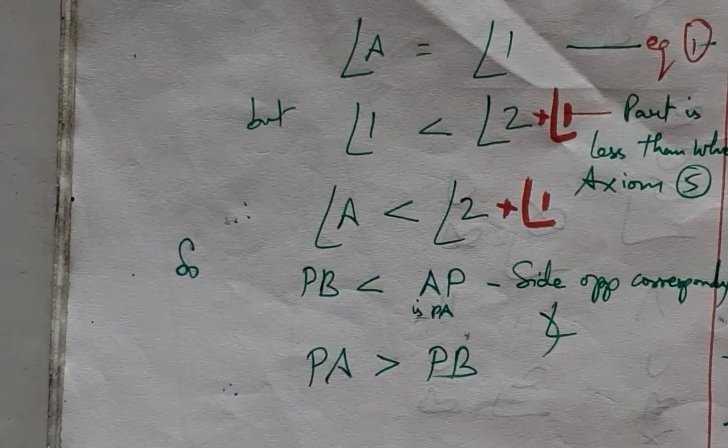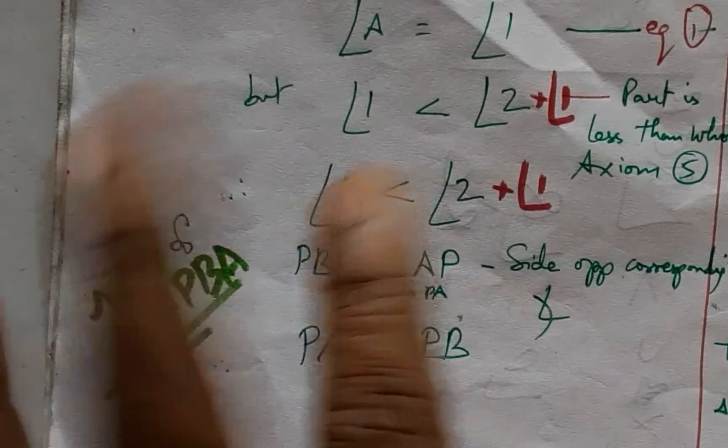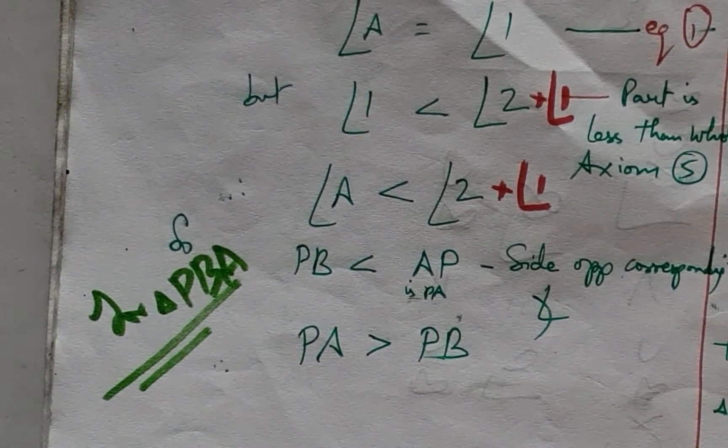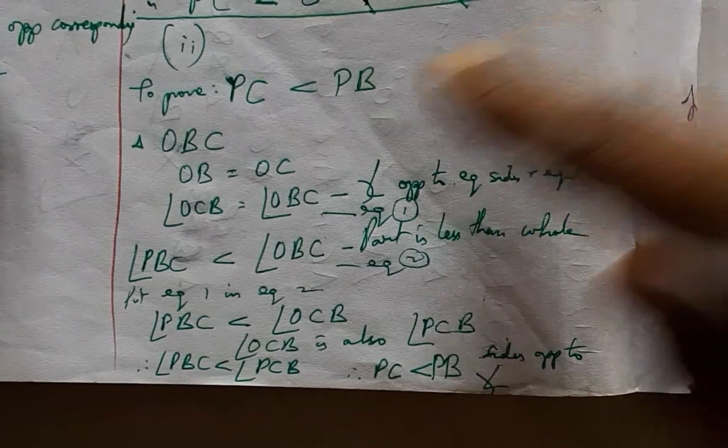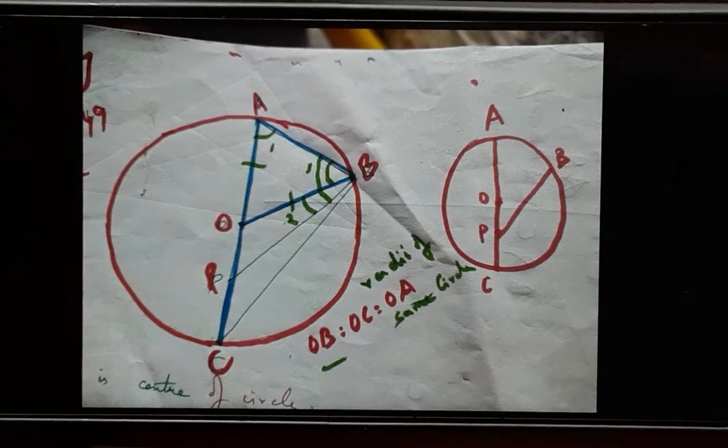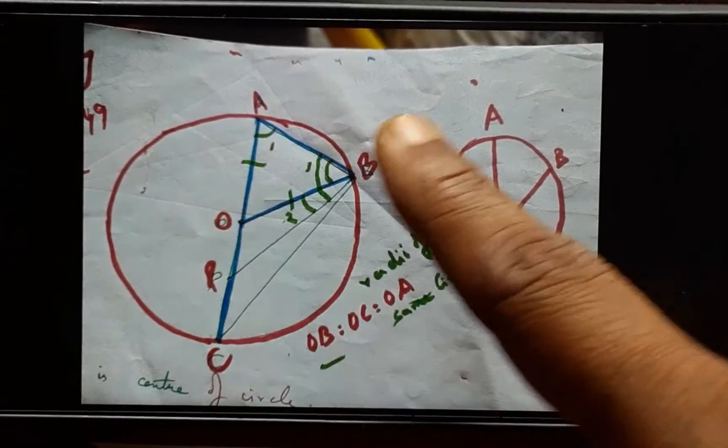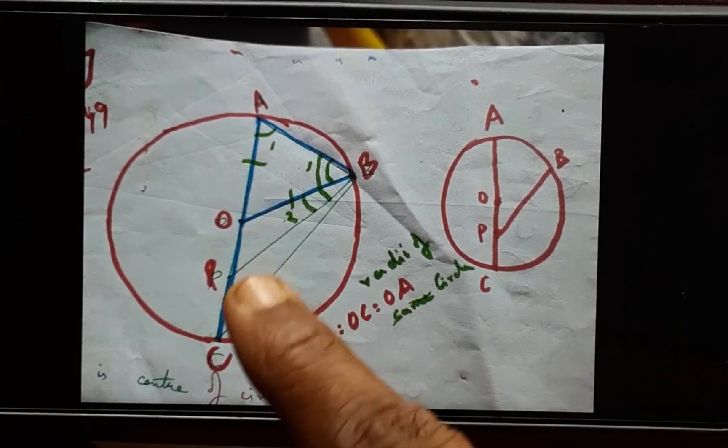This is a simple application and that is how we arrive at the proof. We have to derive the conclusion here. And the second part: PC is less than PB. All we need to do is we need to pick up triangle OBC wherein again OC and OB are equal, being the radii of the same circle.